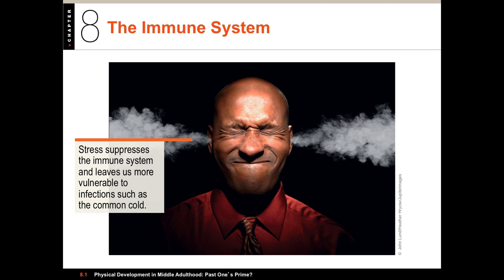Stress suppresses the immune system, weakening it and leaving us more susceptible to infections. Stress hormones connected with anger — which is why we have this guy here who's flipping out — can constrict blood vessels in the heart and can, in fact, lead to a heart attack in people who are at risk.